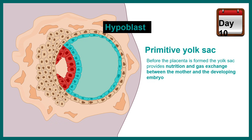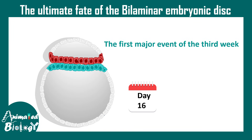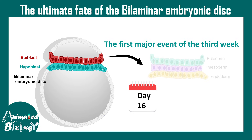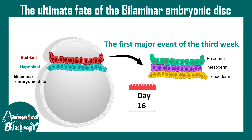The other component of the bilaminar embryonic disc is the epiblast, shown in red, with the hypoblast in green. The epiblast is actually the future embryo — all the layers of the embryo are formed from the epiblast by the process of gastrulation. Three distinct germ layers, namely ectoderm, mesoderm, and endoderm, are formed in the third week of development, around day 15 to 16.